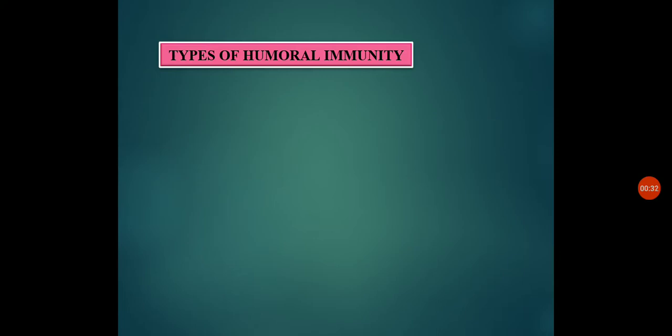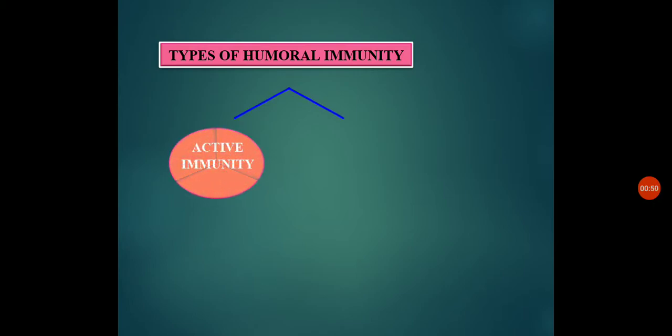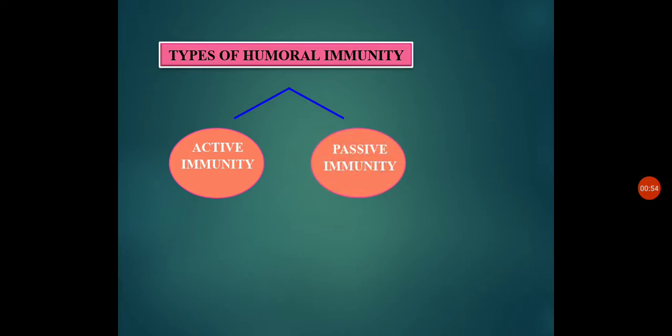Let me recall once again what we mean by humoral immunity. Immunity that we get from the antibodies produced by our immune system is known as humoral immunity, and this humoral immunity is further classified into two types. The first one is active immunity and the second one is passive immunity.